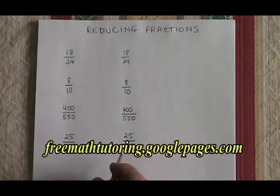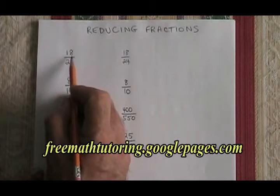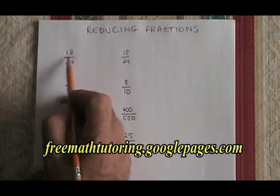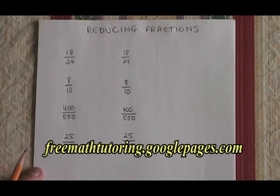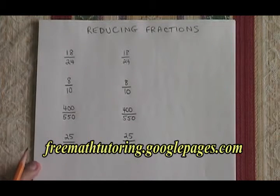To reduce fractions, we look for a common factor between the numerator and the denominator, and we divide both top and bottom by that common factor. We would like to use the greatest common factor.